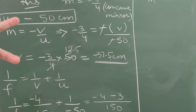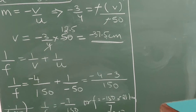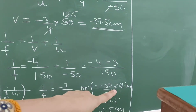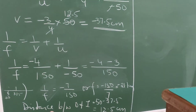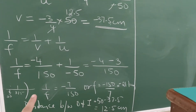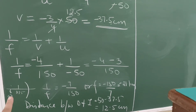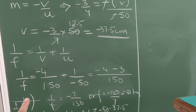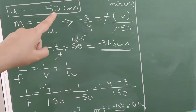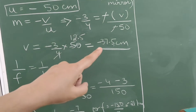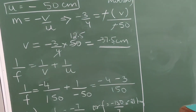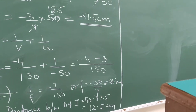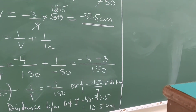Using u and v in the focal length formula, we get the focal length of the concave mirror as minus 21.1 centimeters. For distance between object and image: object is at 50, image is at 37.5, so the gap is 12.5 centimeters.